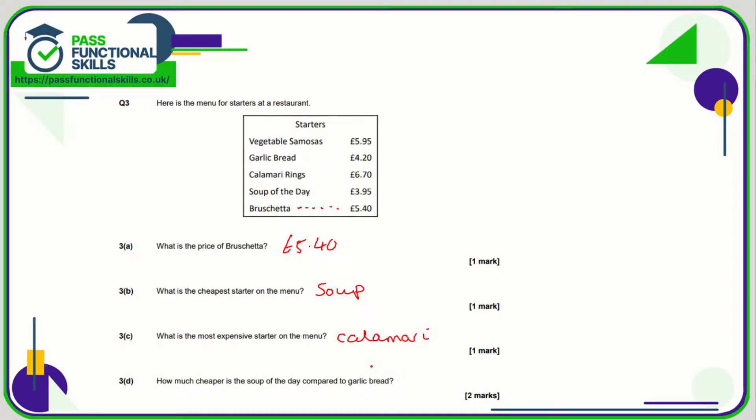So how much cheaper is the soup compared to garlic bread? Well, soup is £3.95. The garlic bread is £4.20. So on your calculator, if it's not obvious to you in your head, £4.20 or 4.2 minus 3.95, and you get an answer of 0.25, which is £0.25, or just give the answer 25 pence. That's also fine.